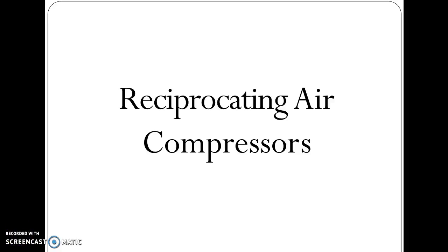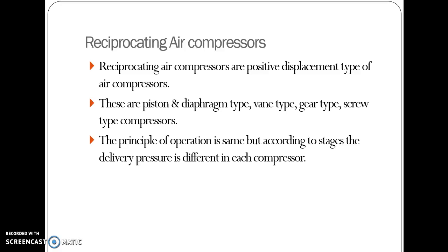Reciprocating air compressors are positive displacement type of air compressors. There are piston and diaphragm type, fan type, gear type, and screw type compressors available. The principal operation is the same but after two stages the delivery pressure is different in each compressor.